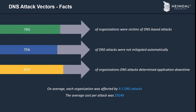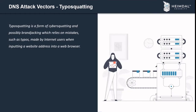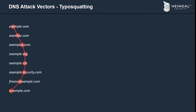Typosquatting — also called URL hijacking, a sting site, or a fake URL — is a form of cybersquatting that relies on mistakes, such as typos, that internet users make when entering a website address into a browser. If a user accidentally enters an incorrect address, they may be led to an alternative URL owned by a cybersquatter. The main idea behind typosquatting is to replicate the DNS server and the legitimate website to trick the user.